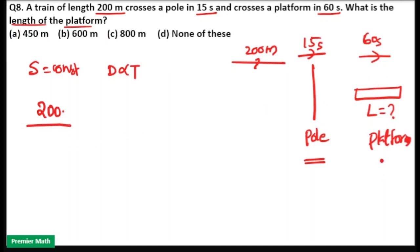Then second case when train crossing the platform, that means train length is equal to 200 plus platform length is equal to L. So that is the distance.